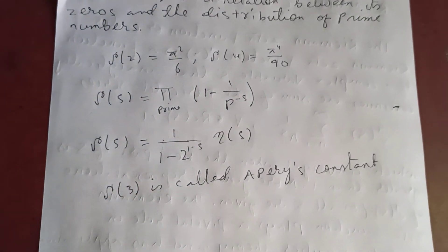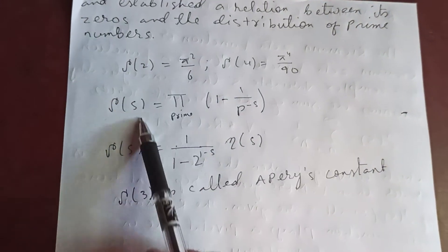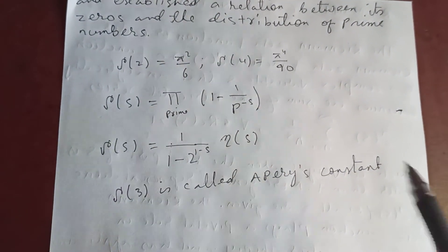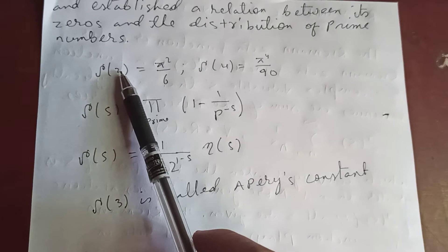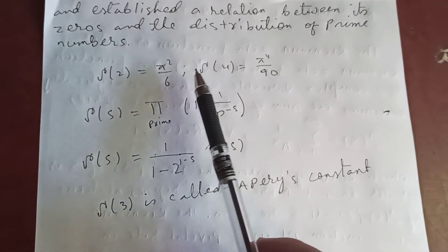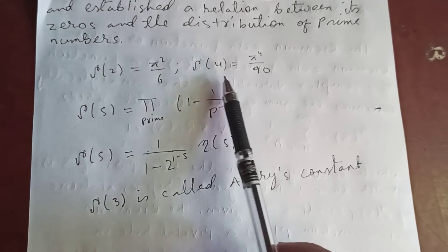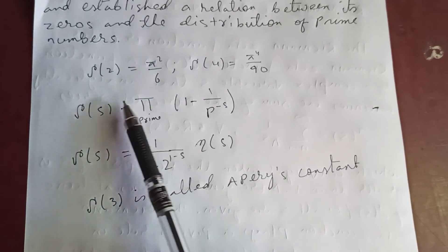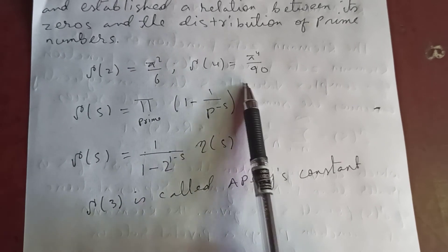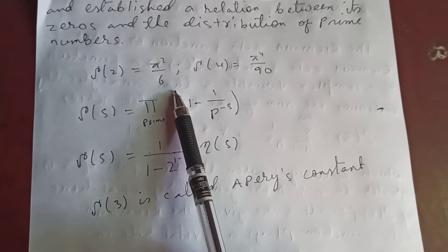All this we studied in our previous video. Euler first studied the Riemann zeta function for even numbers, for real numbers, and he came out with these results.